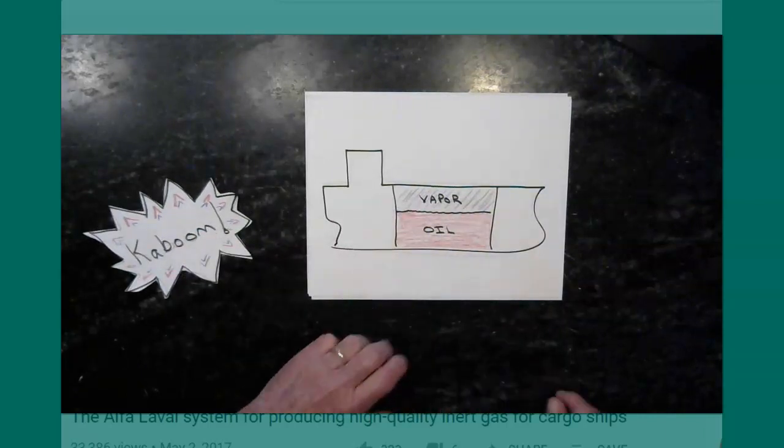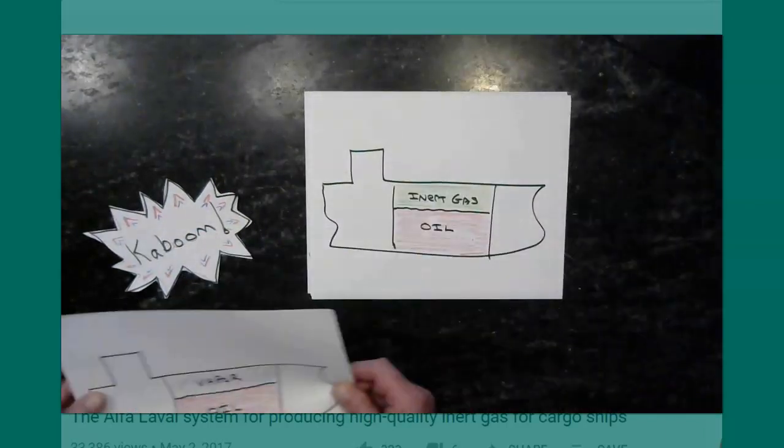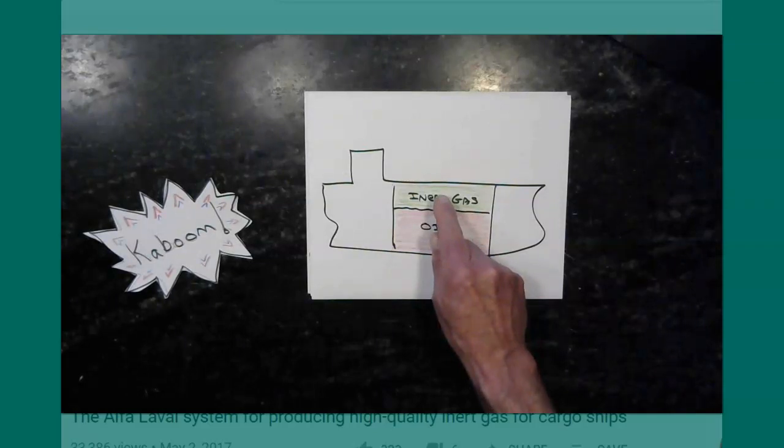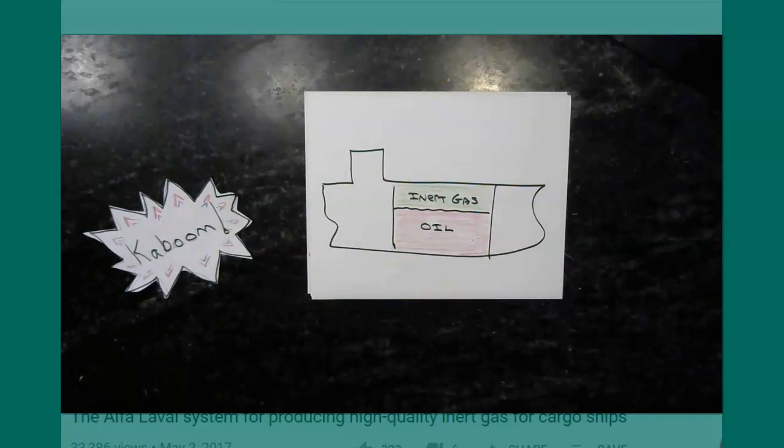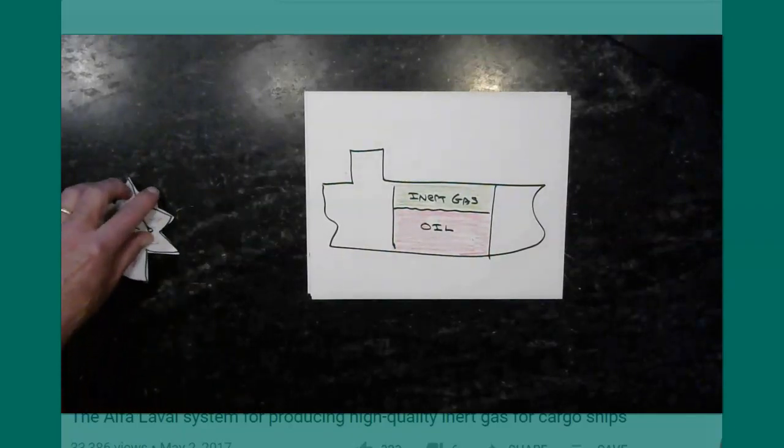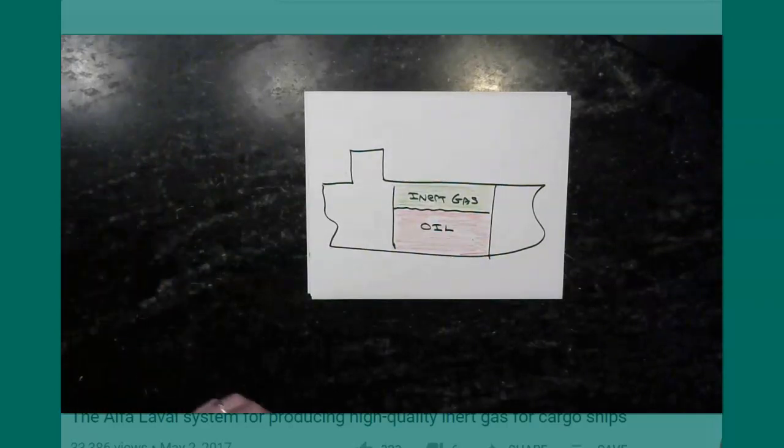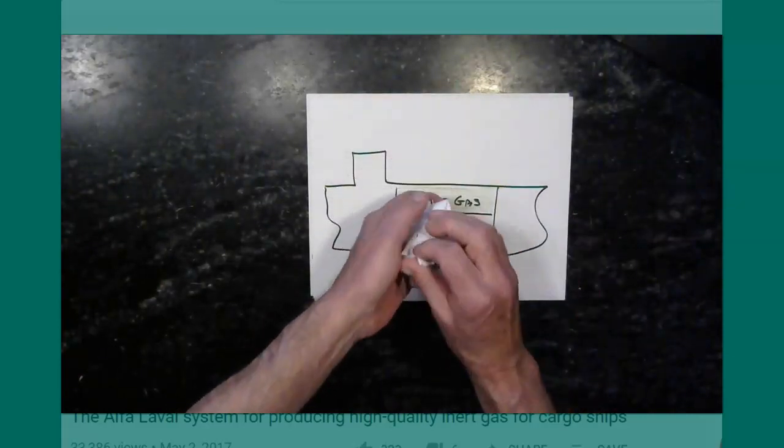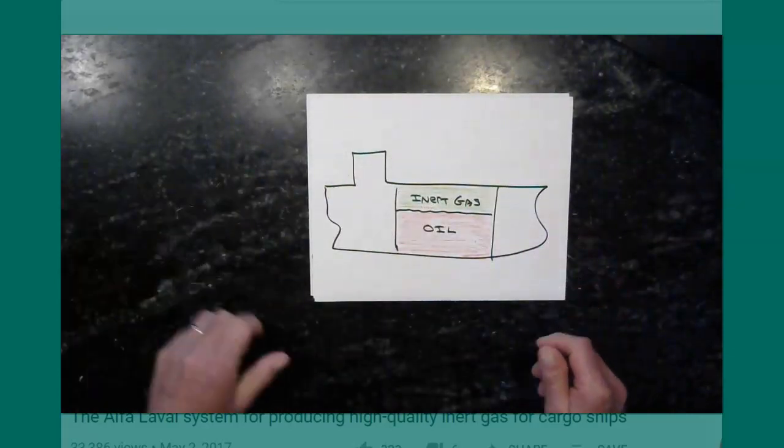So what do we do? We go into something called inert gas. We want to replace that explosive atmosphere above the oil, and we want to replace it with something called an inert gas that is non-combustible. We want to change that atmosphere by adding a non-combustible, non-explosive gas into that situation and change that atmosphere so that we can avoid this.